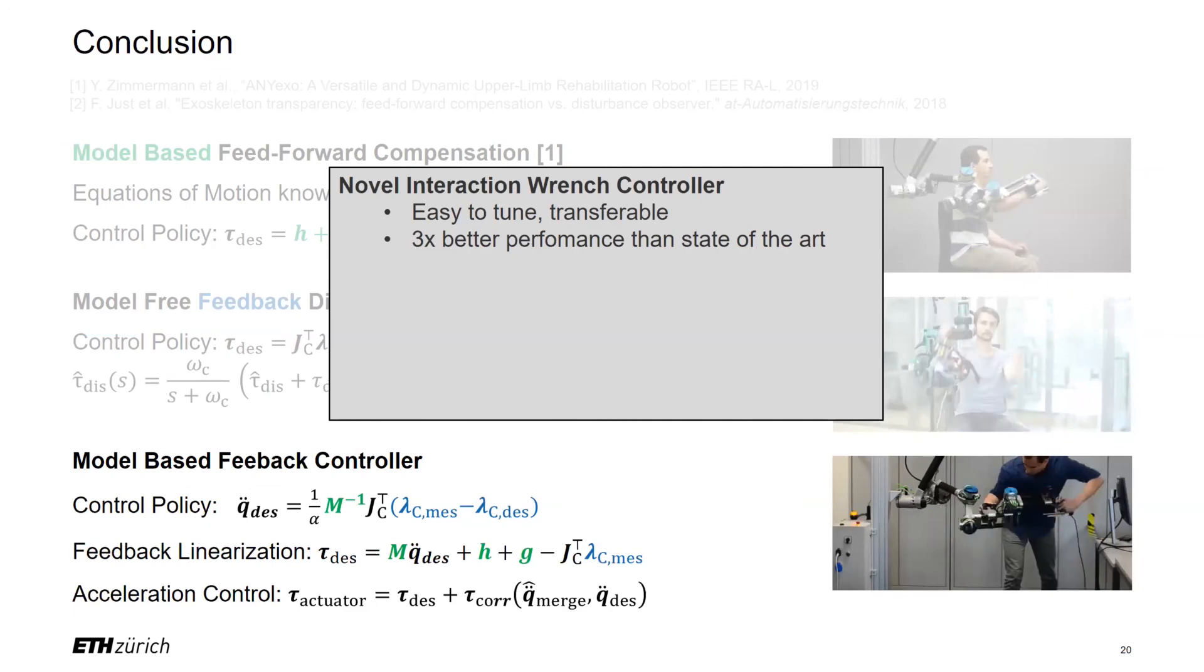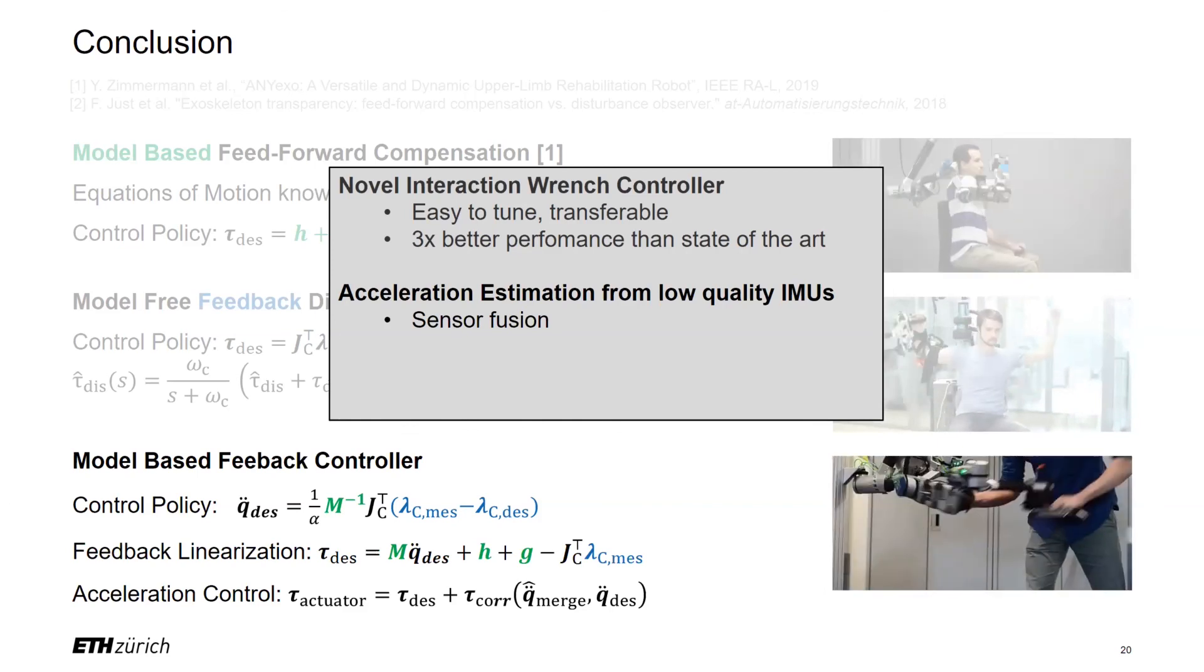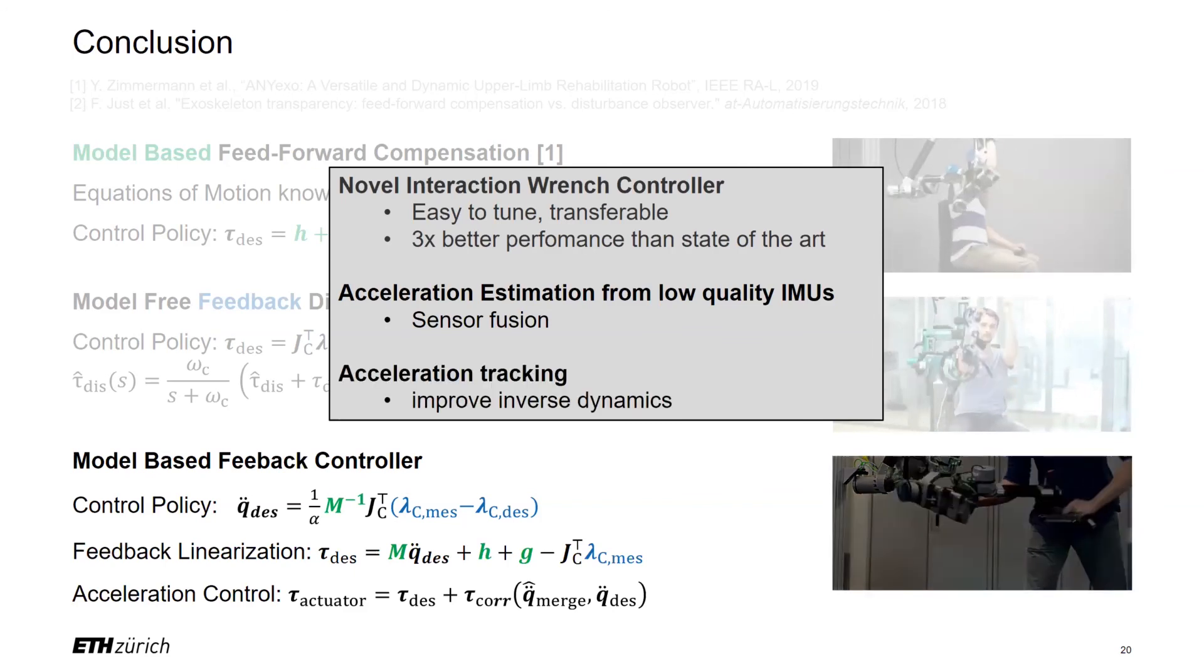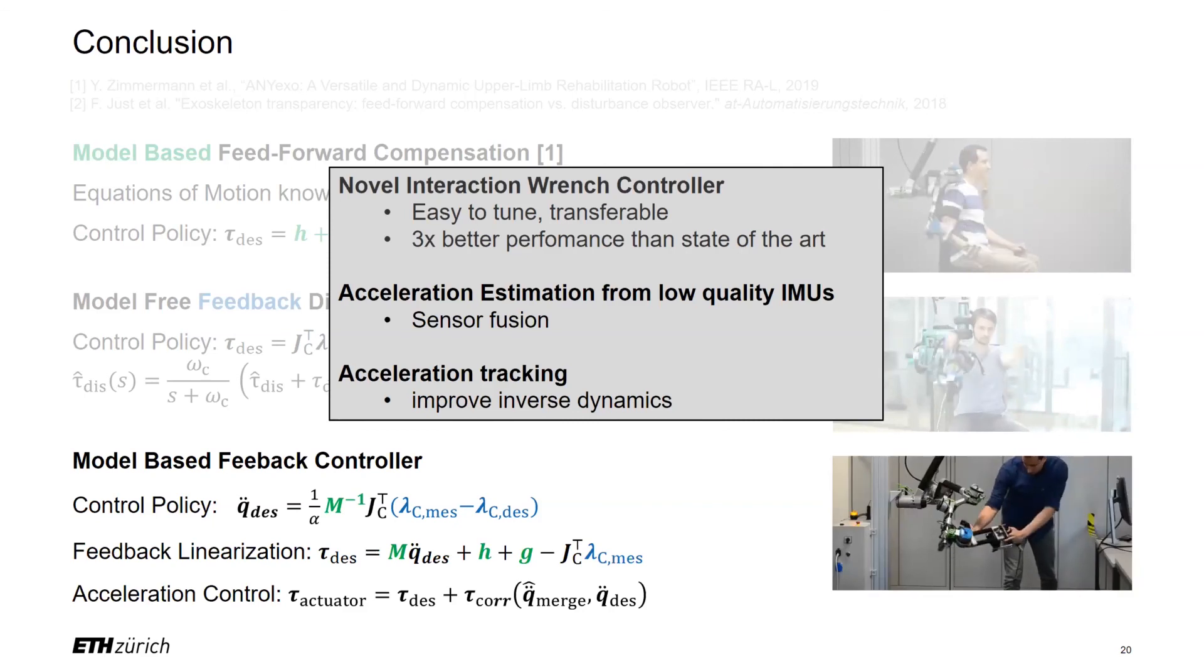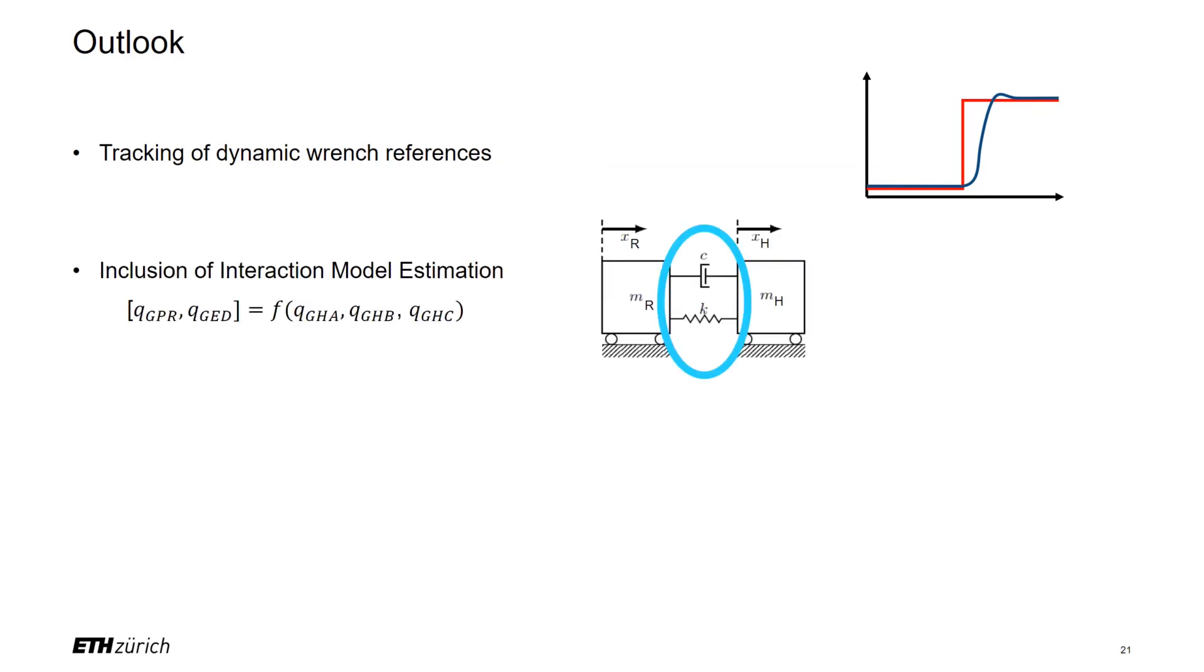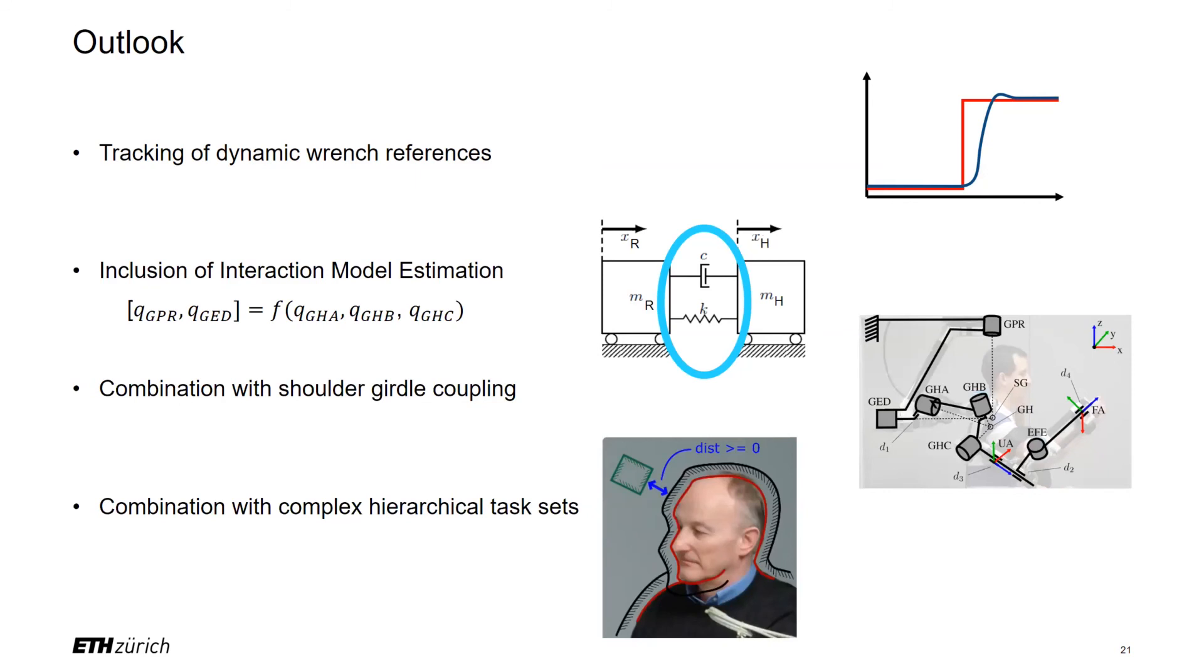To conclude, we introduce an interaction force controller that uses a distinct feedback linearization to track the interaction force under large disturbances by the user. We could demonstrate that this control approach is able to reduce the undesired reaction forces by a factor of three compared to the state-of-the-art. Further, we introduced an acceleration tracking controller that uses IMU signals to improve the tracking performance. In further research, we strive to check the force tracking performance with dynamic references, to include knowledge about the environment in the model, to combine the transparency controller with a kinematically coupled shoulder girdle, and to demonstrate the transparency controller within complex hierarchical task sets.